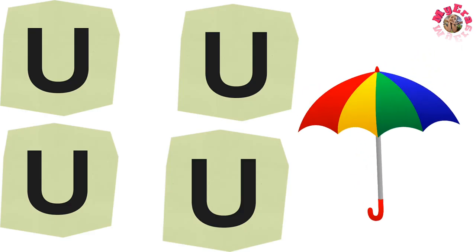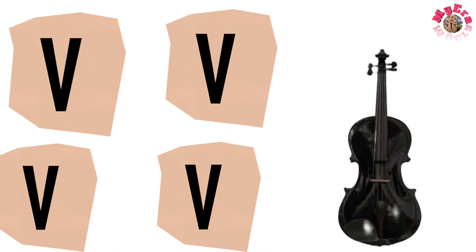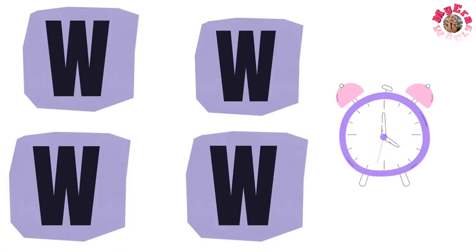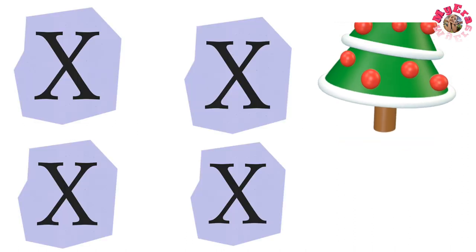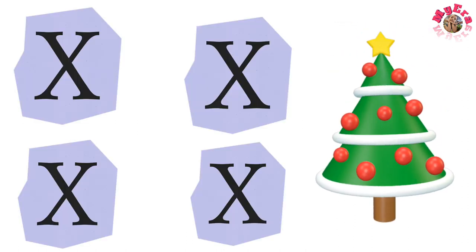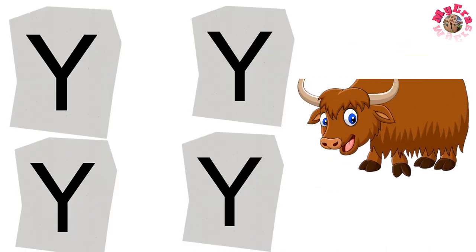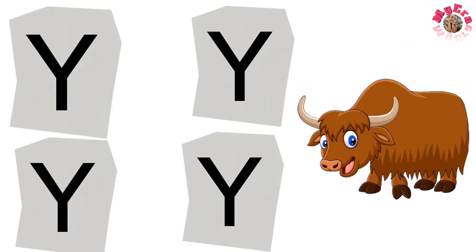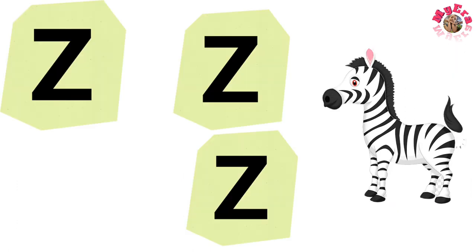U for umbrella, V for violin, W for wolf, X for xistry, Y for yaw, Z for zebra.